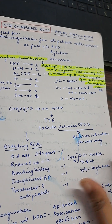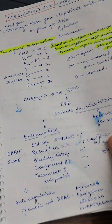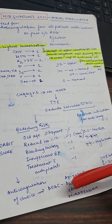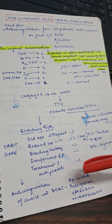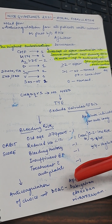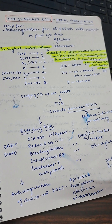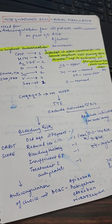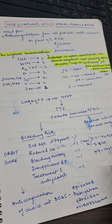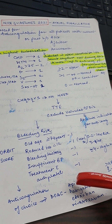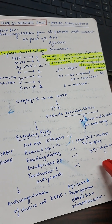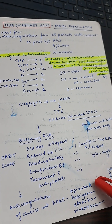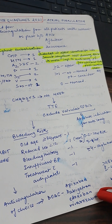For anticoagulation drug choice, according to the NICE 2020 guidelines, DOACs are the anticoagulants of choice — for both atrial fibrillation and venous thromboembolism including pulmonary embolism. The DOACs to use are apixaban, dabigatran, edoxaban, or rivaroxaban.